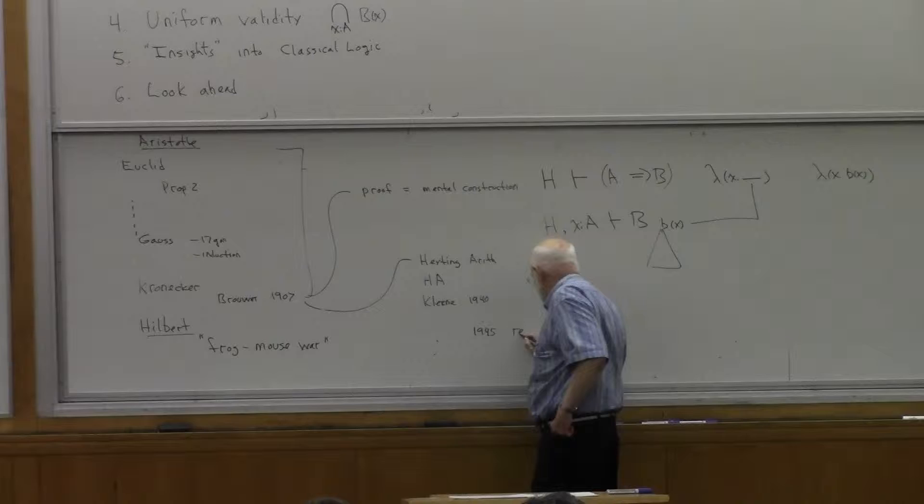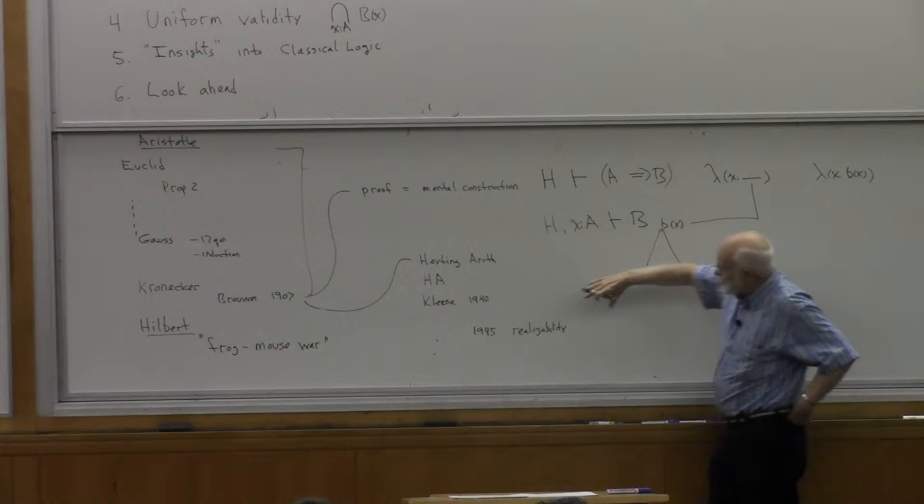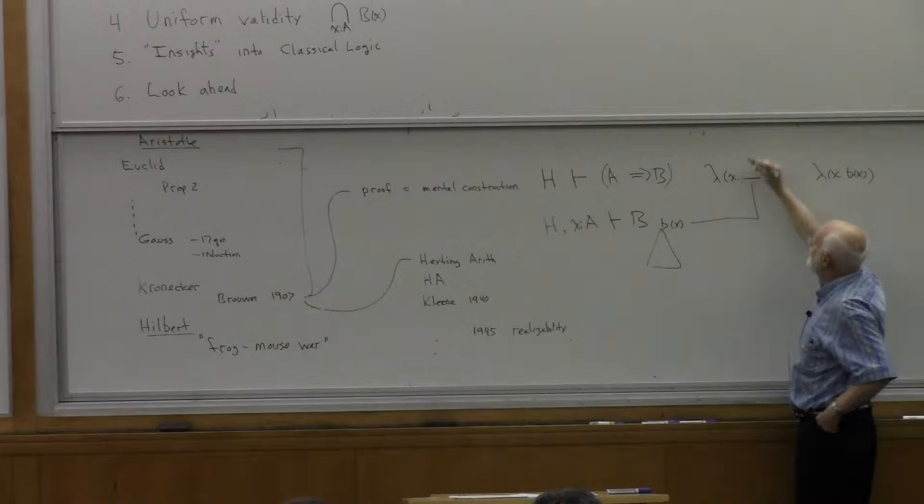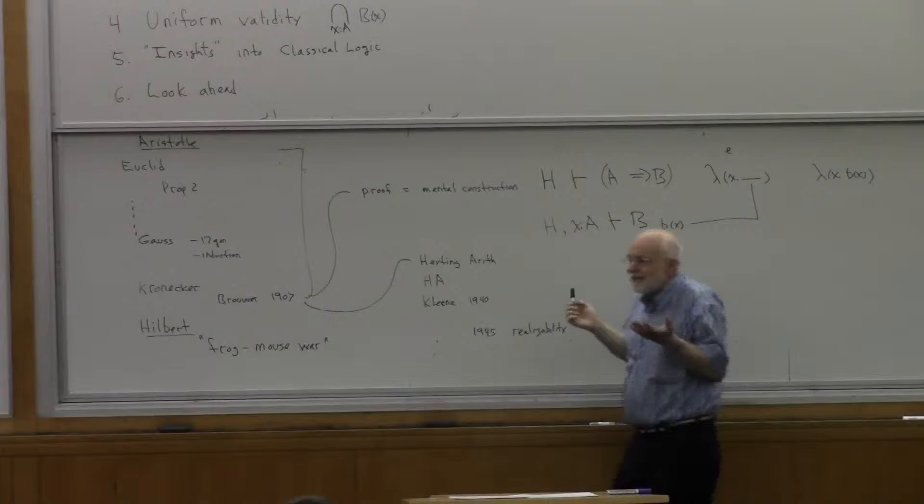He didn't publish this thing until 1945, but he published a realizability semantics where he essentially gave the interpretation that we give now, but he used indices of recursive functions. Instead of putting this here, he would put a Gödel number of a function like this. So the thing would be realized by a number e.